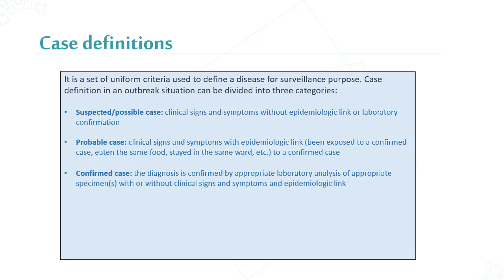Case definition in an outbreak situation can be divided into three categories: suspected, probable, or confirmed. A suspected case has clinical signs and symptoms without epidemiological link or laboratory confirmation. A probable case has clinical signs and symptoms with an epidemiological link to a confirmed case. An epidemiological link exists when a case was exposed to an unconfirmed case or ate the same food or stayed in the same ward. A confirmed case has a diagnosis confirmed by appropriate laboratory analysis of an appropriate specimen, with or without clinical signs and symptoms and epidemiological link.